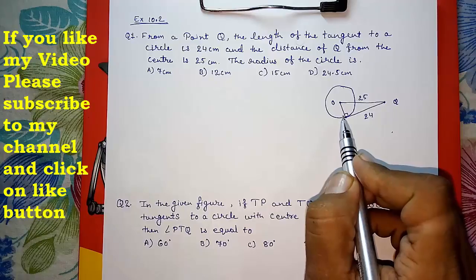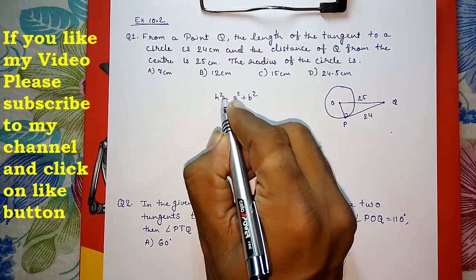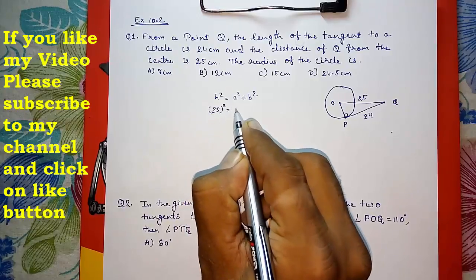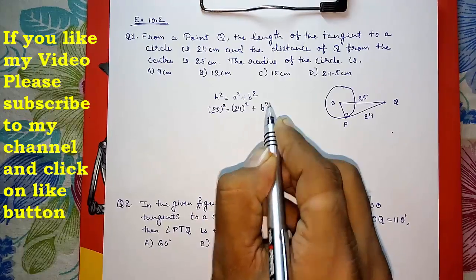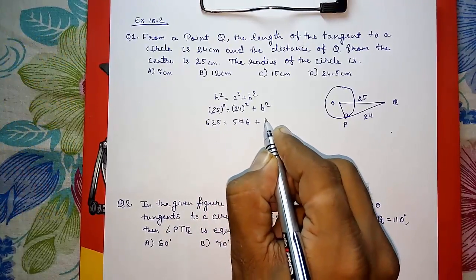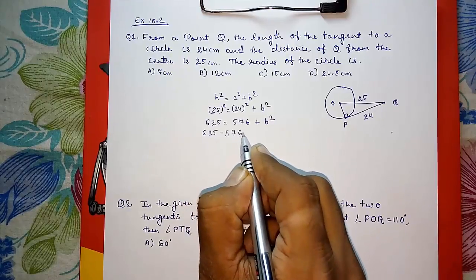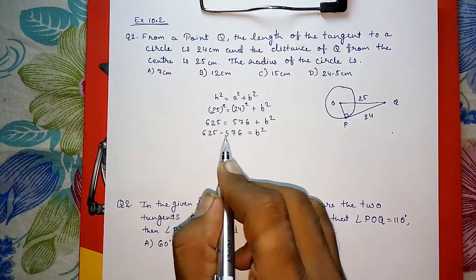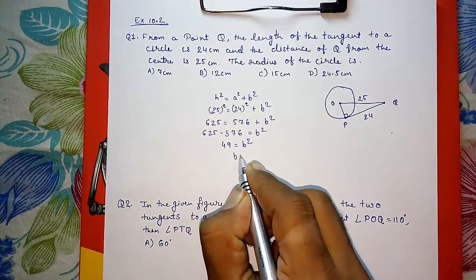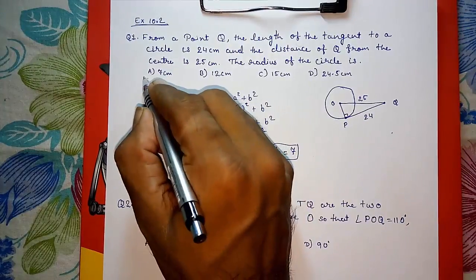The radius OP is always perpendicular to the tangent by Theorem 10.1. We can find OP using the Pythagorean theorem: hypotenuse squared equals the sum of squares of the other two sides. So 25² = 24² + OP², giving 625 = 576 + OP², therefore OP² = 49, and OP = √49 = 7. The radius is 7 cm. Answer: A.